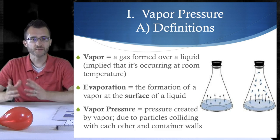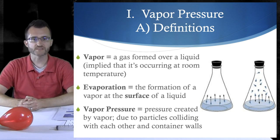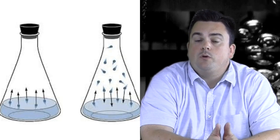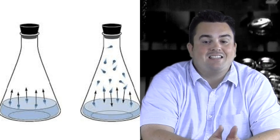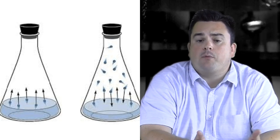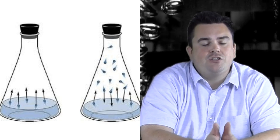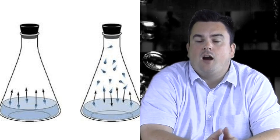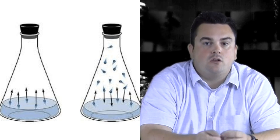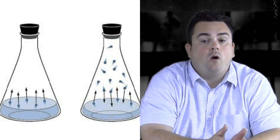Finally, vapor pressure. Pressure created by vapor. It's due to the particles colliding with each other and the container walls. If you look at the two images we have of the flask, they're both stoppered. They're both considered closed systems. If we look at the flask on the left, we have the liquid phase at the bottom of the flask. And they're trying to illustrate evaporation here. So they're showing the particles of the liquid going off into the gaseous phase.